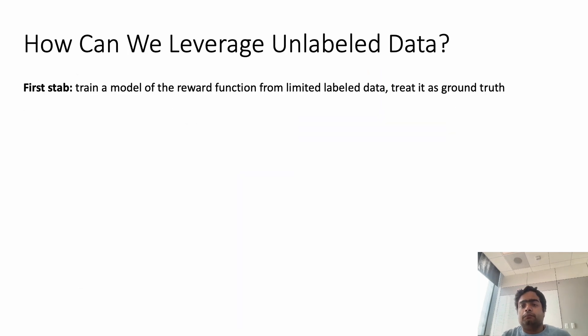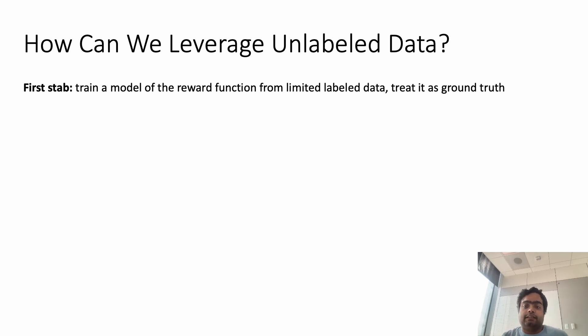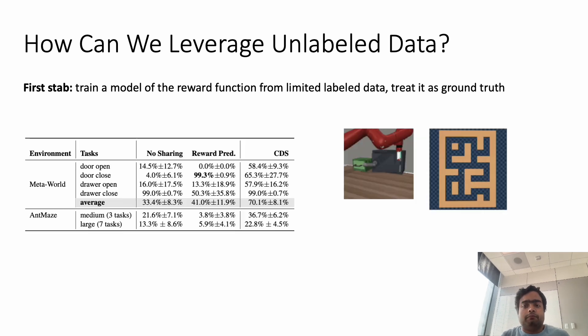A first-step solution towards leveraging unlabeled data would perhaps be to simply train a model of the reward function from the limited labeled dataset we have and treat it as ground truth for then running offline RL. How does this approach actually perform?